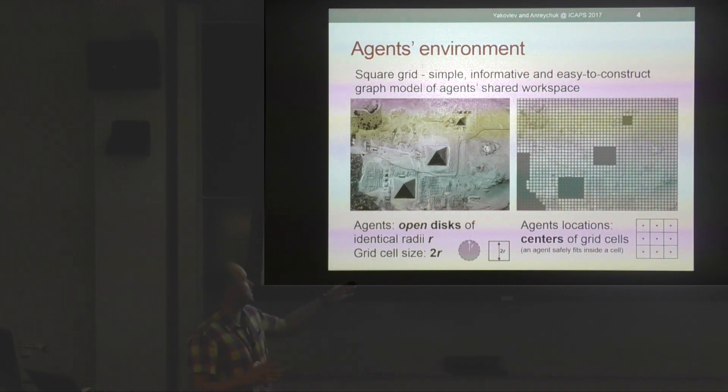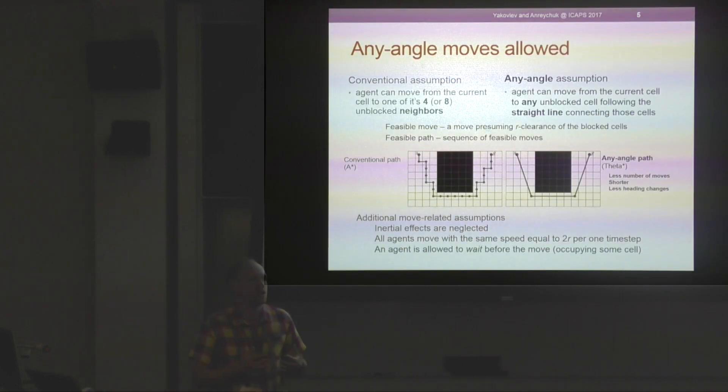We consider all agents to be open disks of identical radius R, and their workspace is tessellated into a square grid where the grid cell size equals R, and agents' locations are tied to the centers of the grid cells.